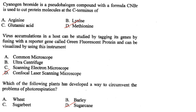Cyanogen bromide (CNBr) is a pseudohalogen compound used to cut protein molecules at the C-terminus of methionine. Answer is option D.